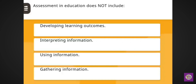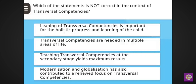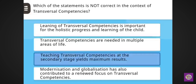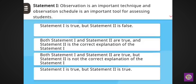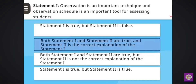Next question: Assessment in education does not include developing learning outcomes. Next question: Which of the statements is not correct in the context of transversal competences? Correct answer: teaching transversal competences at the secondary stage yields maximum results. Next question — Statement 1: Observation is an important technique and observation schedule is an important tool for assessing students. Statement 2: Observation helps us go beyond the idea of normative developmental expectations and enables us to really see and celebrate. Correct answer: both statement 1 and statement 2 are true, and statement 2 is the correct explanation of statement 1.